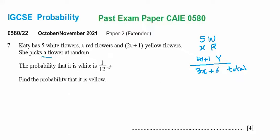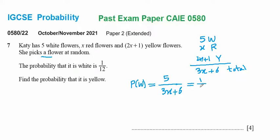It's given that the probability of picking a white flower is one over twelve. The probability of white equals five divided by the total three x plus six. From the given information this probability equals one over twelve, so we set them equal. This is a linear equation — we cross multiply.